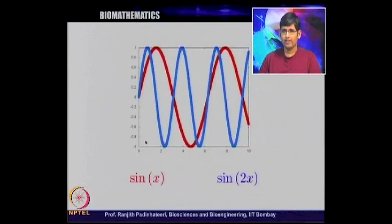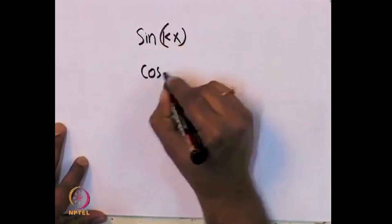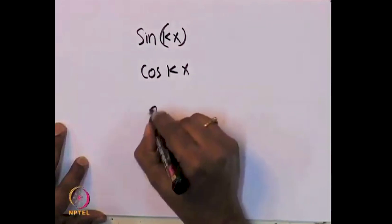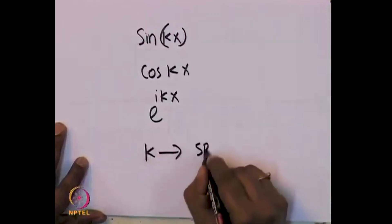If we say sine wave with k equal to 1, people will immediately understand this red curve, or we say sine wave with k equal to 2, we understand it should look like the blue. So there are two ways of representing it: you can specify the function as a function of x, or you can specify something as a function of frequency, which is k. k is essentially the spatial frequency.